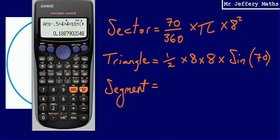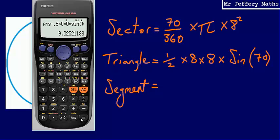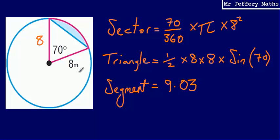The last thing to do is work out the area of the segment by typing this all into the calculator and subtracting the two. For the area of the sector: 70 over 360 multiplied by pi multiplied by 8 squared. Then subtract the area of the triangle: half multiplied by 8 multiplied by 8 multiplied by sine 70. That gives an area of 9.03 to three significant figures. This time we were dealing with metres, so that's 9.03 metres squared.